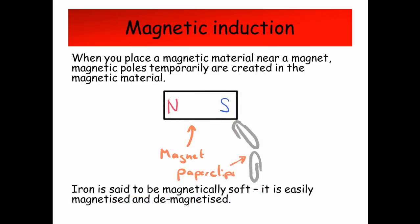Magnetic induction. When you place a magnetic material near a magnet, magnetic poles are temporarily created in the magnetic material. Iron is said to be magnetically soft. It's easy to magnetise and demagnetise.